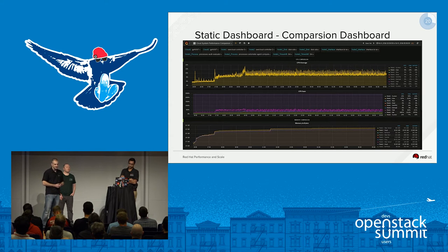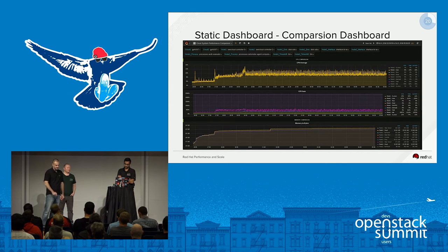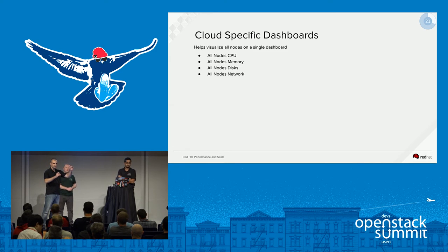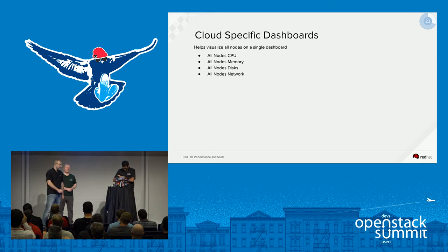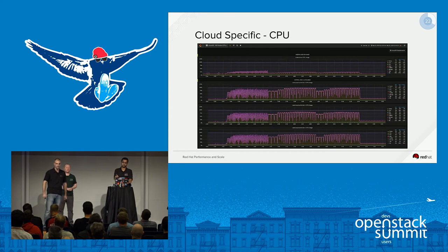This is an example of the static dashboard. We can compare two different clouds, two different nodes from the clouds, or the same cloud and same node comparing disks, interfaces, and different process metrics - you can see we compare CPU and memory right there. Cloud-specific dashboards help you visualize what's going on with your controllers, computes, and undercloud by visualizing everything on a single pane of glass: your CPU, memory, disks, and network. Here's an example of the CPU one - the top graph is the undercloud, and the next three graphs below are three controllers. That's a set of 96 Keystone benchmarks orchestrated through BrowBeat, run from Rally.